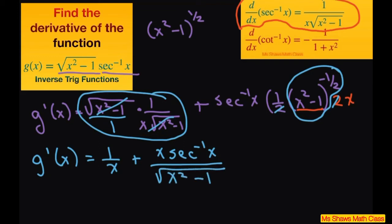Now if you want to write it with a common denominator, we're going to use x times the square root of x squared minus 1. Then you use the butterfly method, and